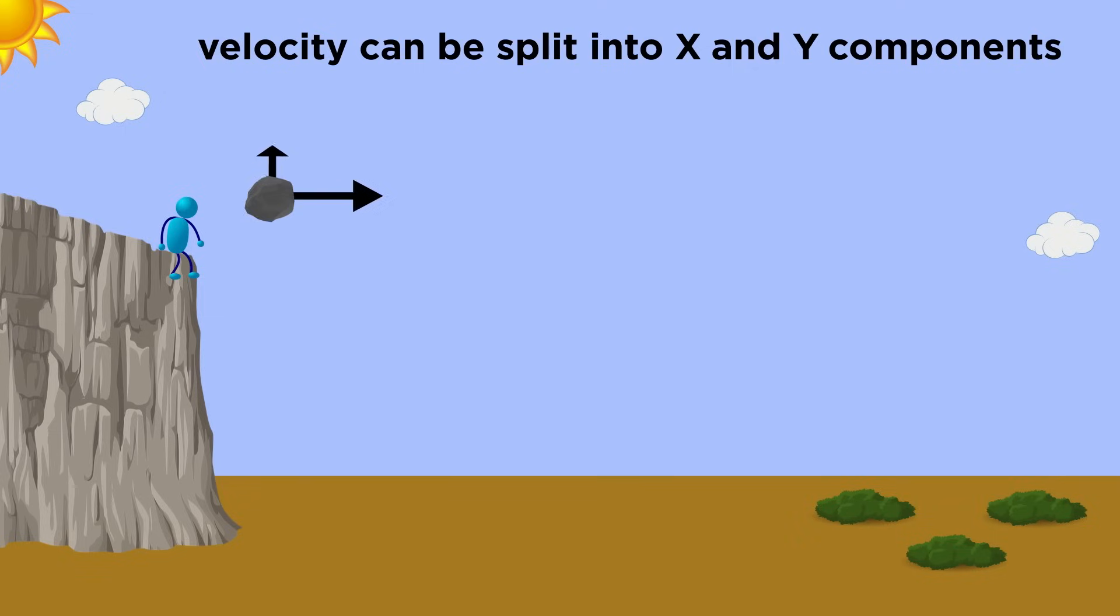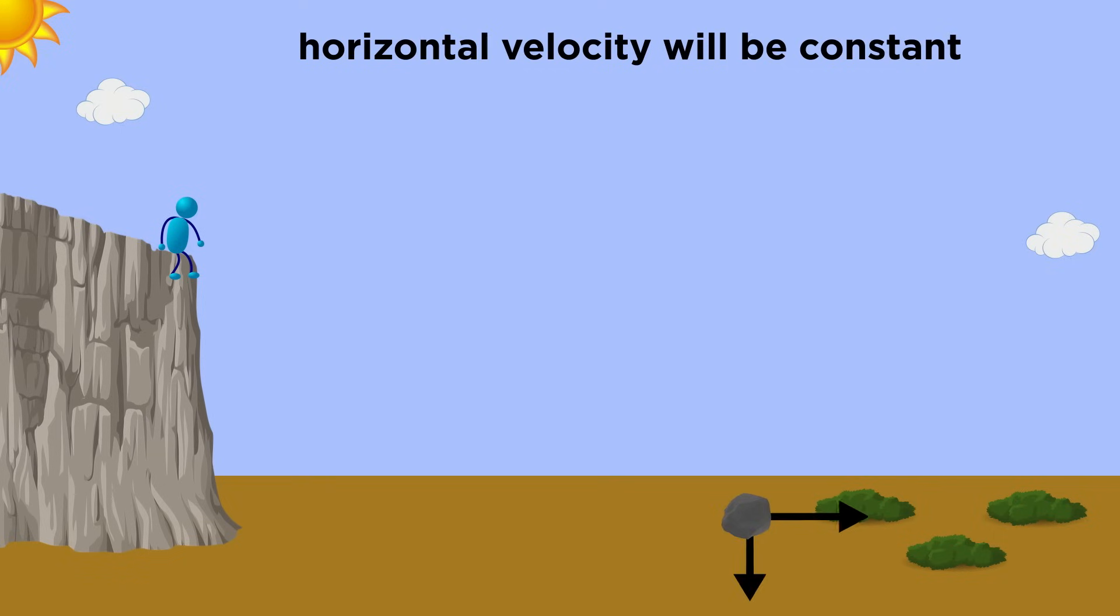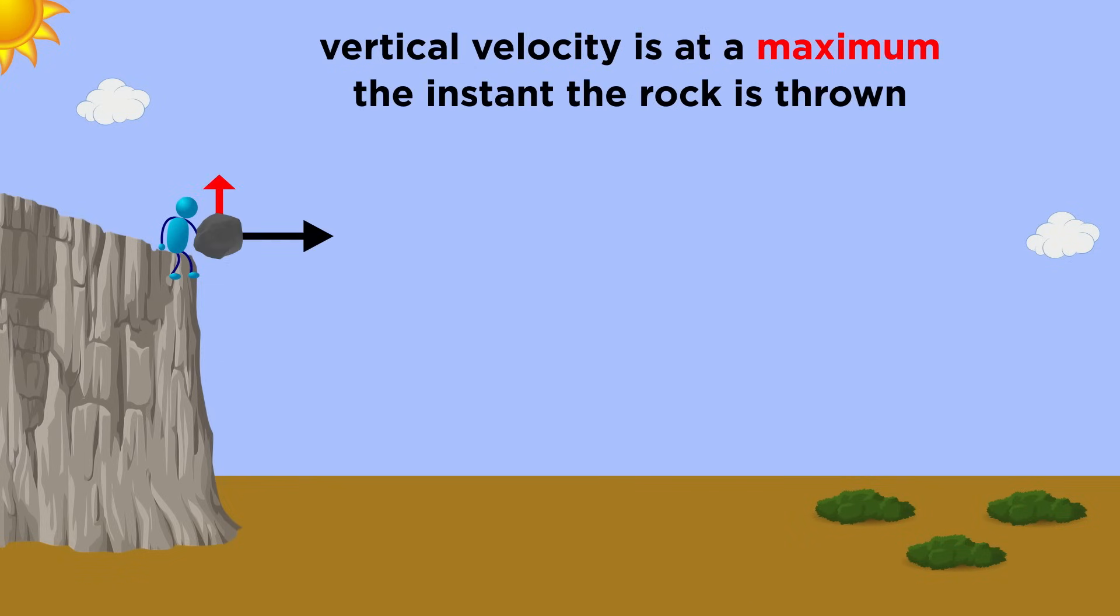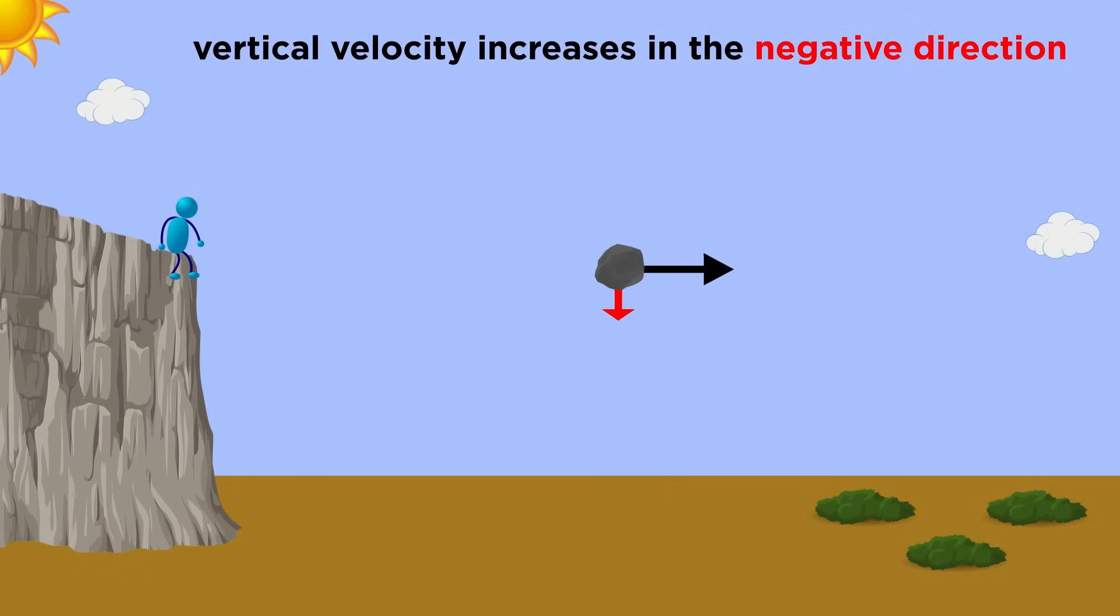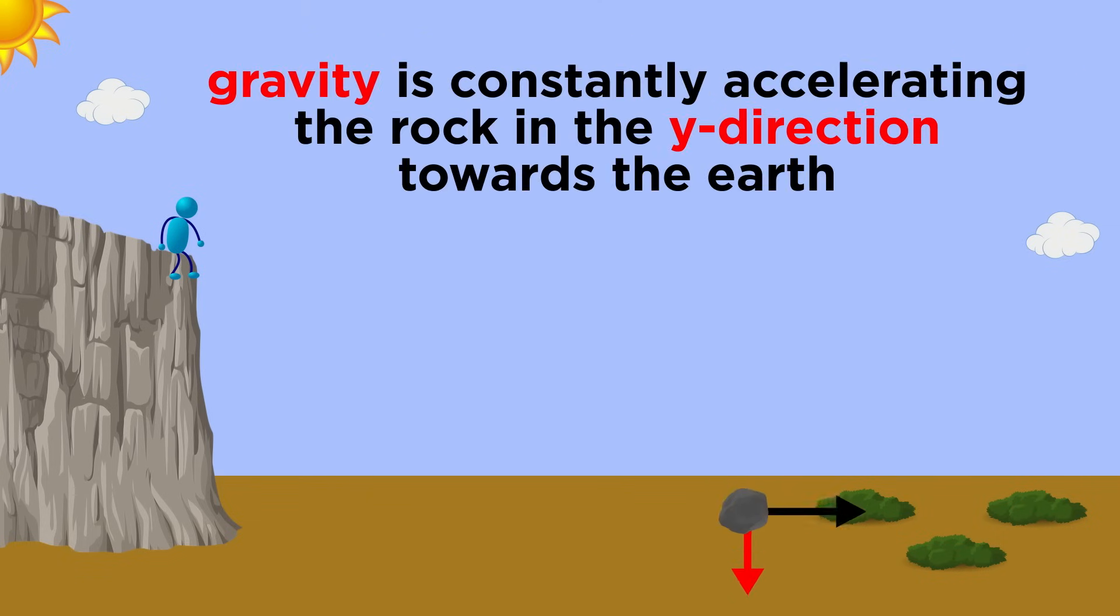And the velocity at any moment can also be split into components. The horizontal velocity will be the same at every moment in this trajectory, as long as we disregard wind resistance. But the vertical velocity will be the greatest at the moment the rock is thrown, and then decrease until it reaches zero at the zenith, and then become increasingly negative until it hits the ground. This is because there is a constant acceleration in the negative direction due to gravity.